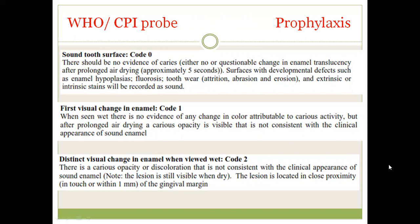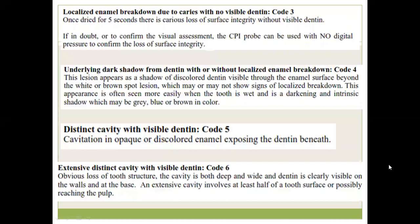Code 1 is the first visual change in the enamel. After air-drying the tooth surface for 5 seconds, a change in translucency or opacity is visible, but after wetting the tooth surface, the change disappears. Code 2 is a distinct visual change in enamel — we can observe the opacity or change in translucency even when the tooth is in wet condition. Most often these early lesions lie in close proximity to the gingival margin or plaque-retentive areas.